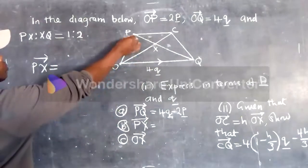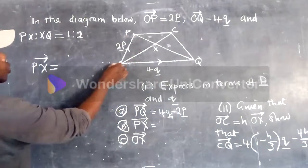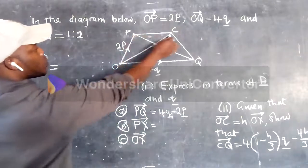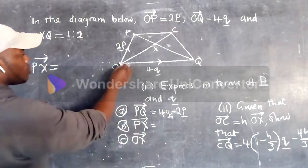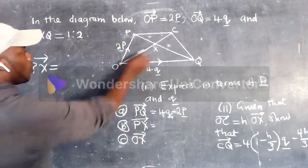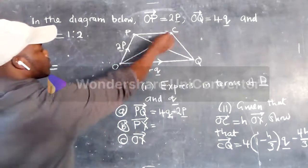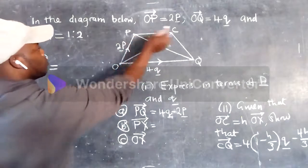We can basically move from p to o to x, or p to c to x. But in this case, it's very difficult because we don't have ox, we don't have xc, we don't have pc.